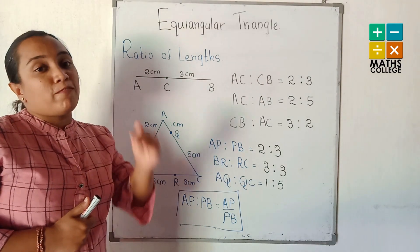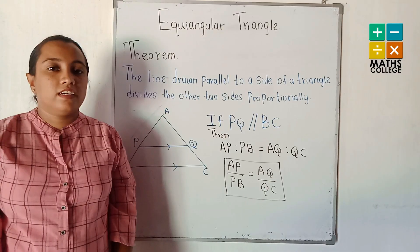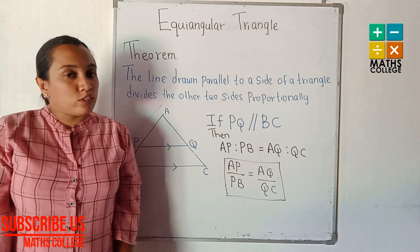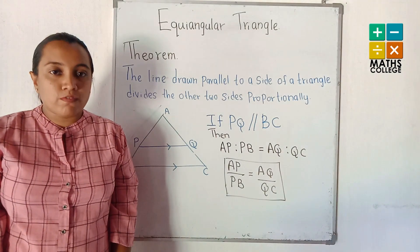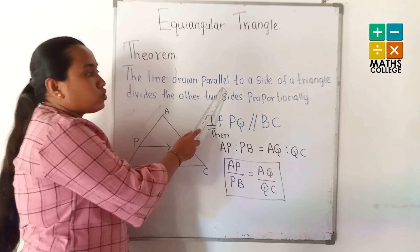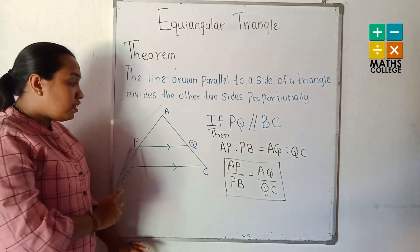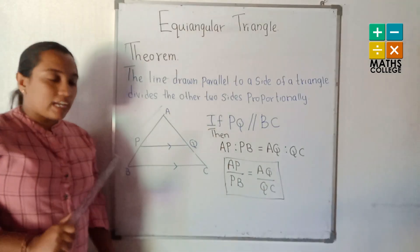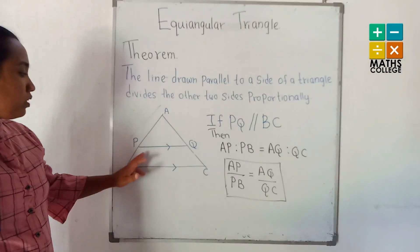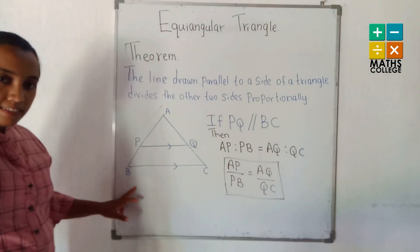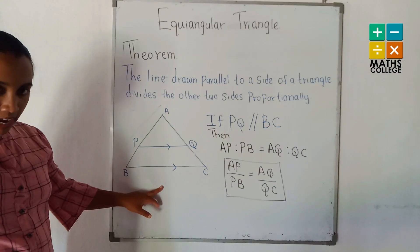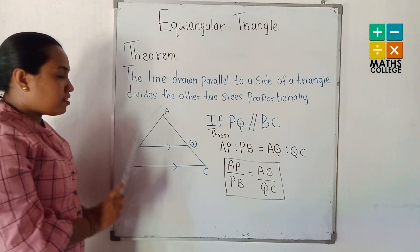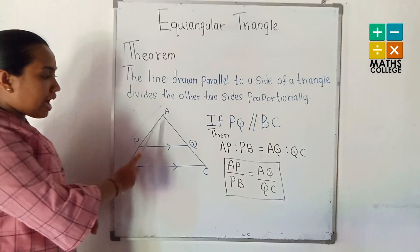Now look at what the theorem is. This theorem is related to the triangle — there are a lot of theorems related to triangles and this is one of them. The line drawn parallel to a side of a triangle divides the other two sides proportionally. If the line PQ is drawn parallel to the BC side, it divides the other two sides into four parts: AP, PB, AQ, and QC.